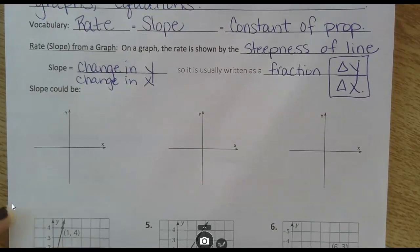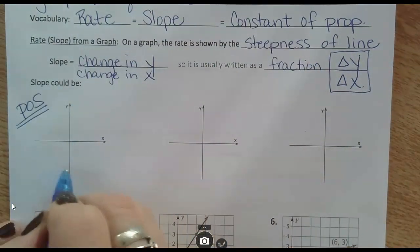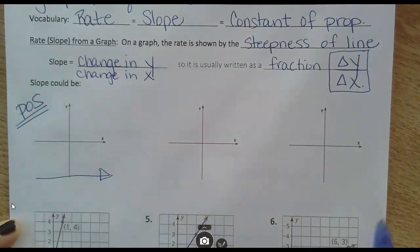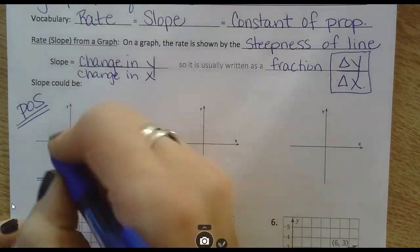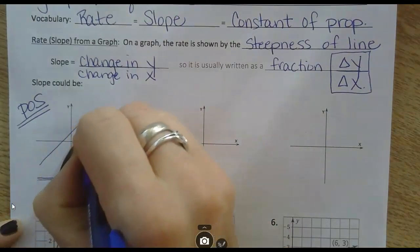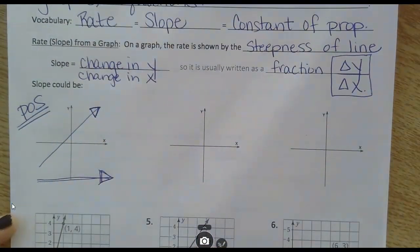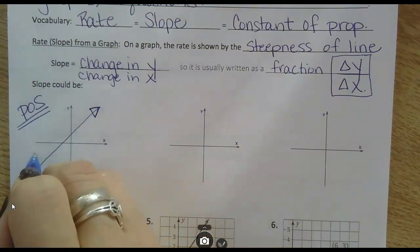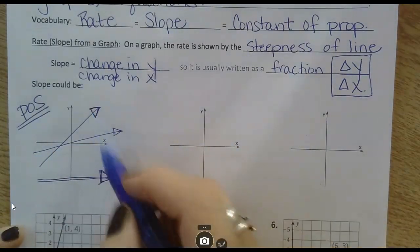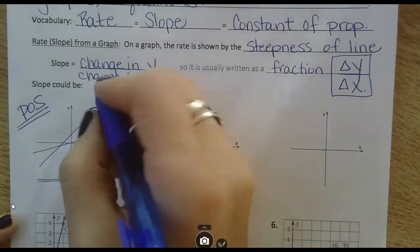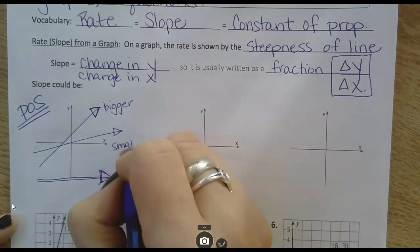Slope could be positive. We can have positive slope, which means as I'm reading my graph from left to right, my values are getting bigger. This is a positive slope, because it's like an uphill from left to right. I can have a large positive slope. I could also have a smaller positive slope that's not as steep. Both are positive, going up from left to right, but this one is bigger, this one is a little bit smaller.